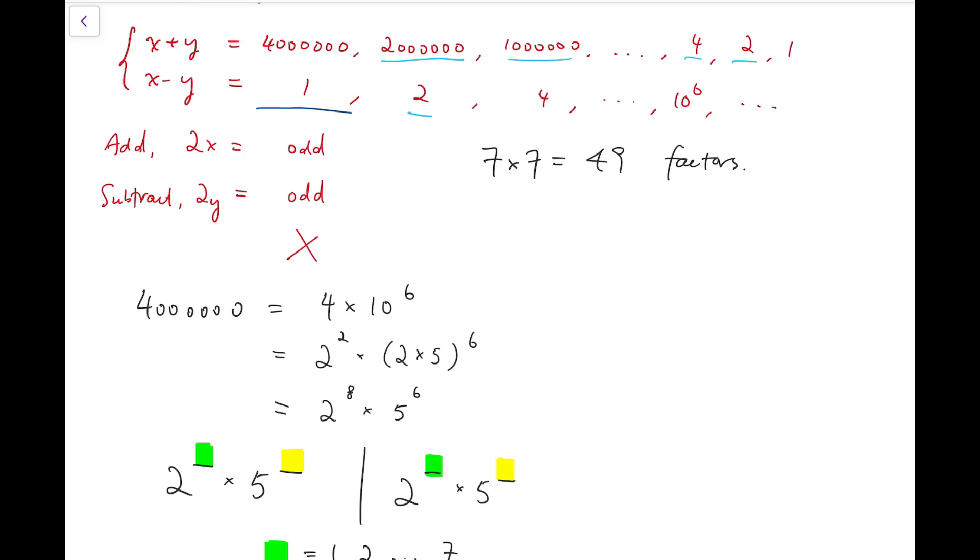For example, if x plus y is 2 million and x minus y is 2, then from this I can solve that x and y are 1 million and 1, and then 999,999.